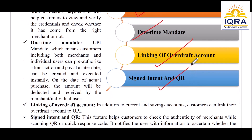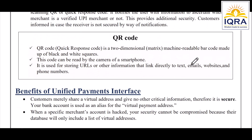Fourth is Signed Intent and QR — the QR feature helps customers check the authenticity of the merchant. When you scan the QR code, it notifies the user with information to verify whether the merchant is a verified UPI merchant or not, providing additional security. The customer will be notified if the receiver is not secured.